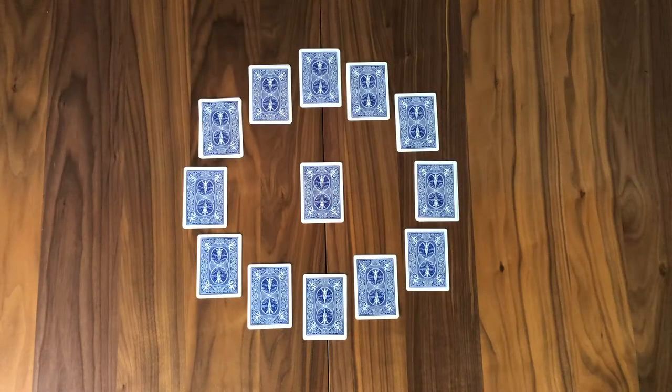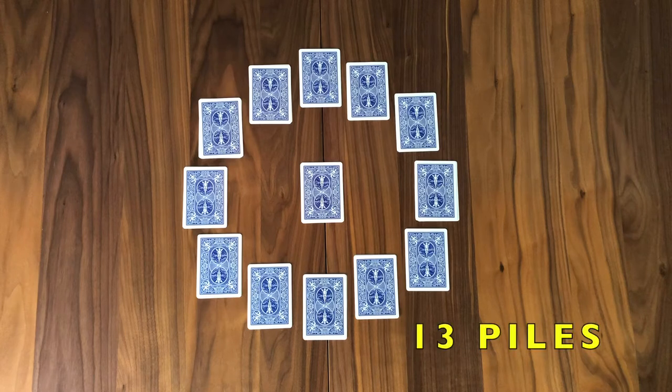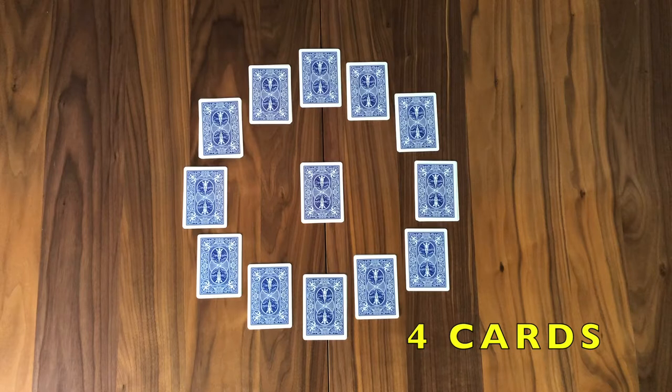Here is what we will do. We will arrange a tableau like you see here, where you will assemble 13 piles of cards, four cards per pile, 12 in a circle, and one in the center, corresponding with the times of the clock.